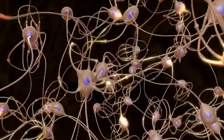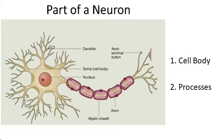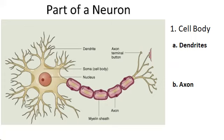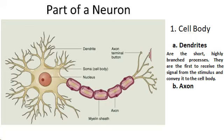The neuron is made up of two basic parts: the cell body and processes. The cell body contains the nucleus and the rest of the parts of a typical cell. Surrounding the cell body are processes divided into two distinct parts: the dendrites and axon. The dendrites are the short, highly branched processes. They are the first to receive the signal from the stimulus and convey it to the cell body.